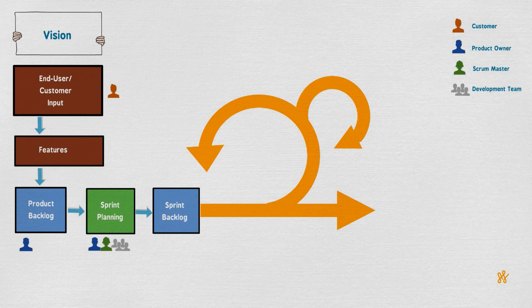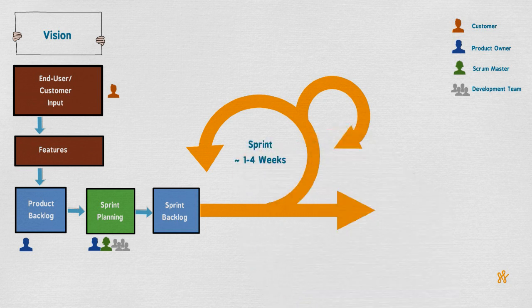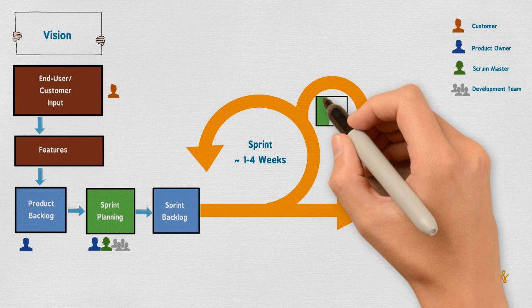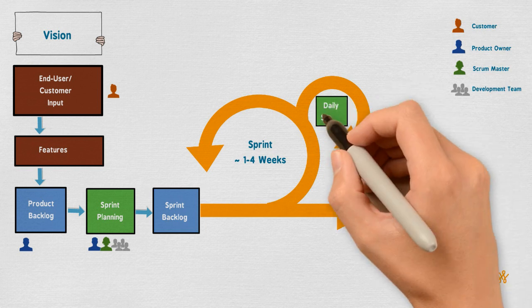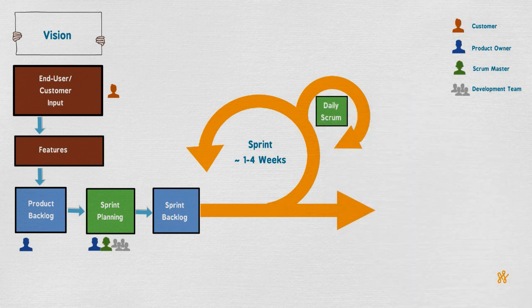While the work continues in the sprint, the team will have the second ceremony, which is the daily Scrum or daily stand-up. As the name suggests, it is a daily meeting for the team, usually for a quarter of an hour at the beginning of the day, discussing what was done on the previous working day, what will be done today, and what are the impediments that the team is facing to facilitate their resolution.